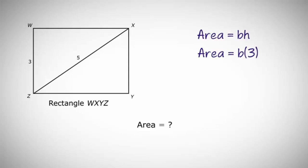The base is going to be WX, the line that is perpendicular to the height WZ. Now remember that rectangles contain four 90 degree angles. When we draw a diagonal from X to Z, we create two right triangles. Now, if you take a look at triangle WXZ, you should see a Pythagorean triplet. We see side lengths of 3 and 5, which tells us that WX must be equal to 4.